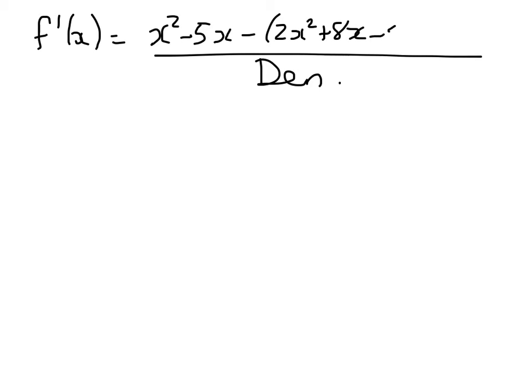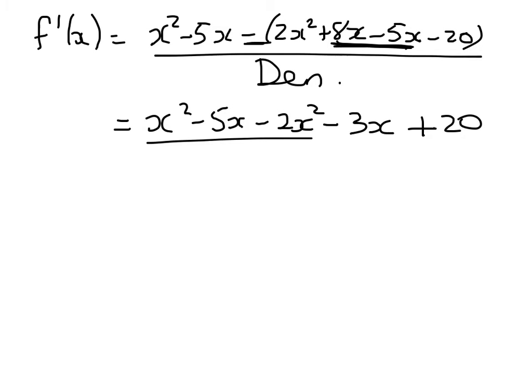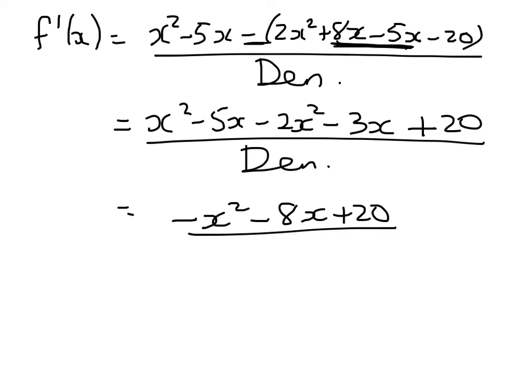So f'(x) is equal to, I'll just write the denominator for the bottom line, x² - 5x minus, expanding out the quadratic, 2x² + 8x - 5x - 20. Now I'm doing this in lots of steps because this is where it's quite easy to make an algebraic error. Now I've got a plus 3x here multiplied by negative so it's going to be minus 3x plus 20 over the denominator. That looks out to be -x² - 8x + 20 over, and now I will write that last line nicely.